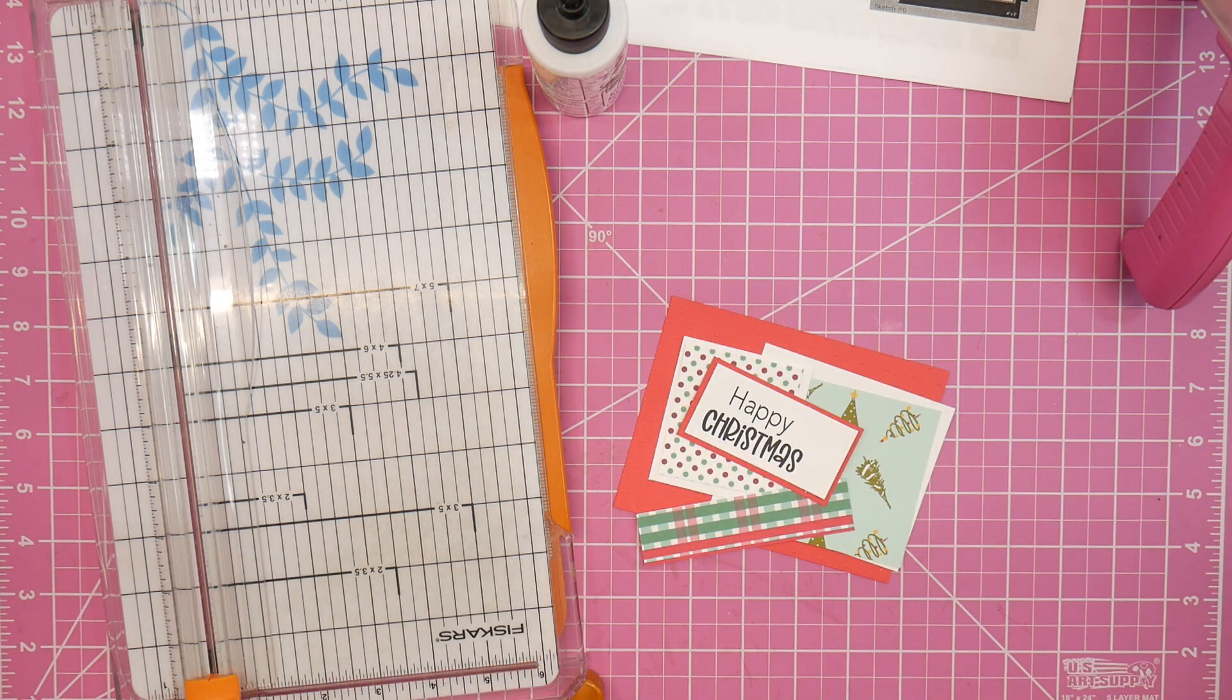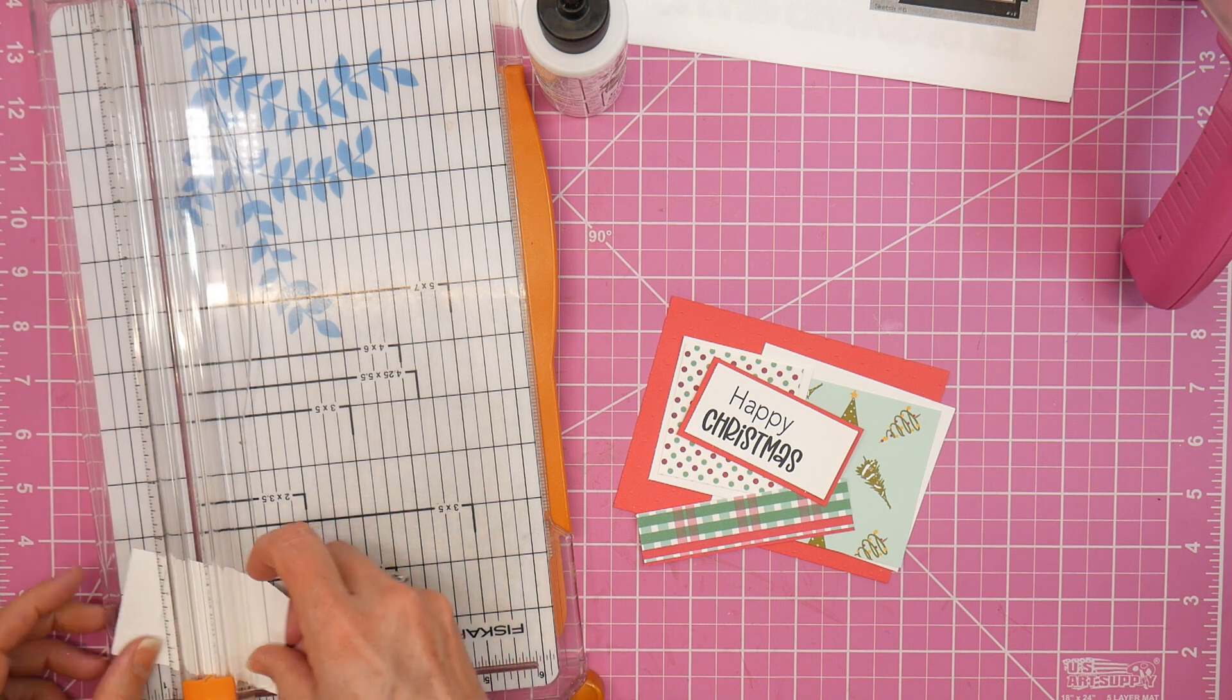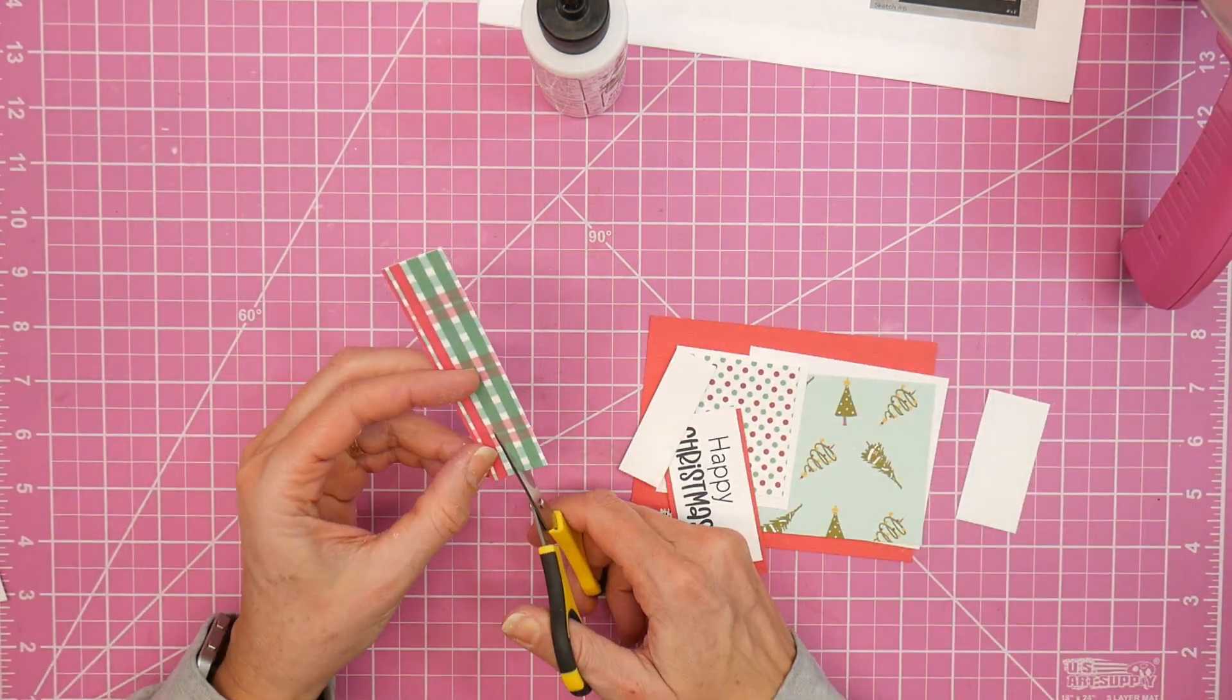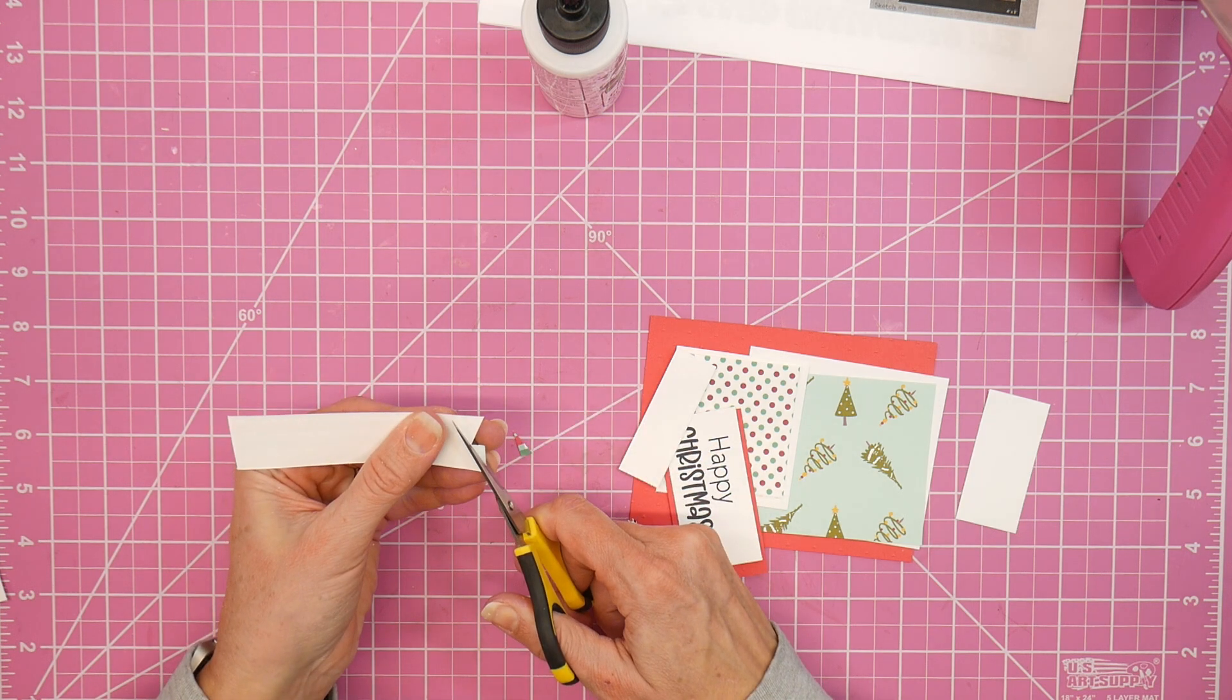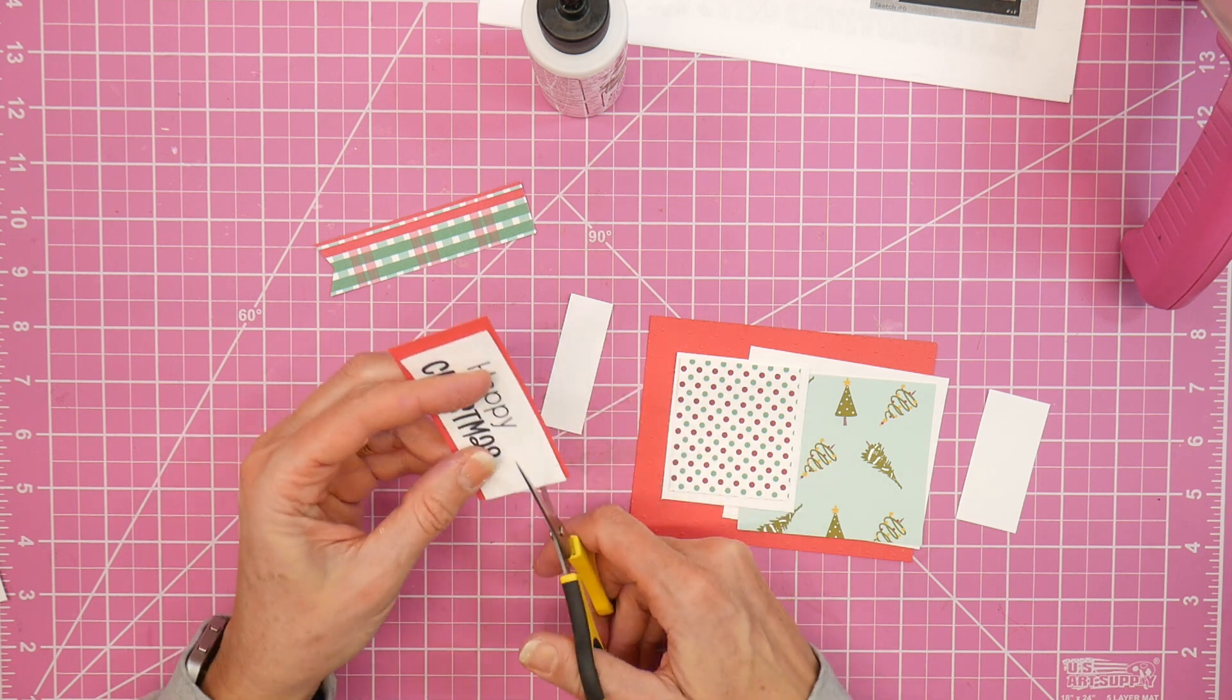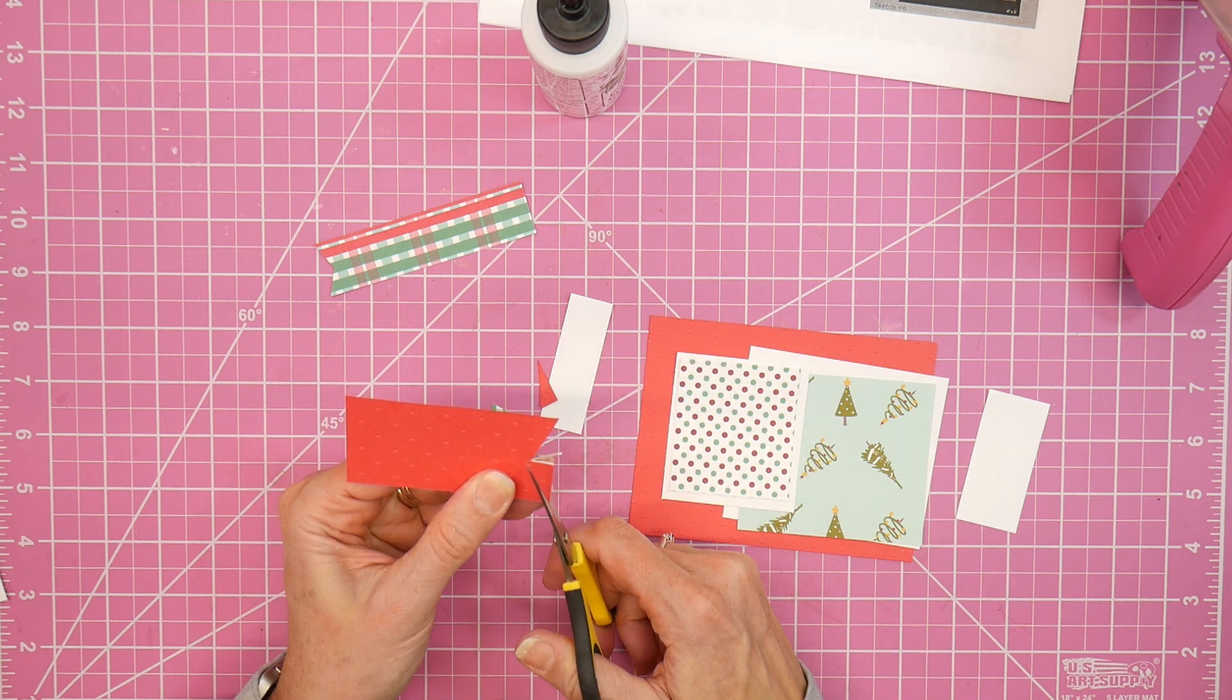So I did flip-flop my pattern paper pieces as well so that the sizes would match up with this kind of the same layout, just in reverse. So adding my fishtail cuts here.